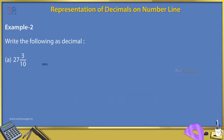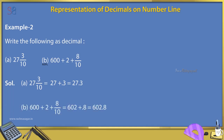Example 2: Write the following as decimals. A. 27 and 3/10. B. 600 + 2 + 8/10. Solution: A. 27 and 3/10 = 27 + 0.3 = 27.3. B. 600 + 2 + 8/10 = 602 + 0.8 = 602.8.